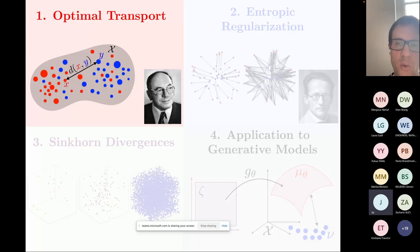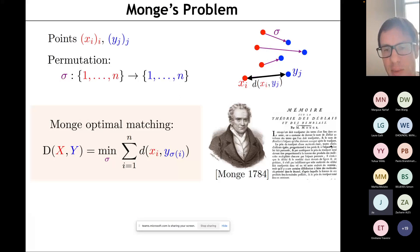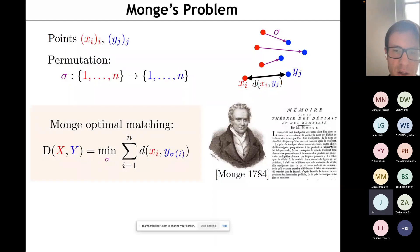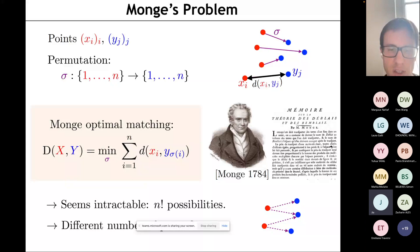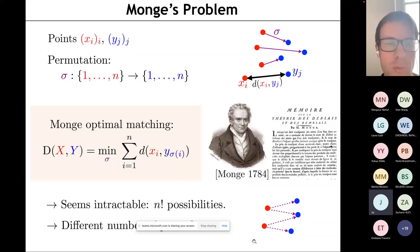I will recap the definition of optimal transport. Historically, it was introduced by Gaspard Monge for a military application, where he looked for a bijection or permutation sigma between two groups of points to minimize the total sum of travel distances — for soldiers moving piles of sand for protection. This is a combinatorial optimization problem which looks intractable. More importantly, what do you do if you don't have the same number of points? The number of red points could even be infinite, so you need a more relaxed formulation.